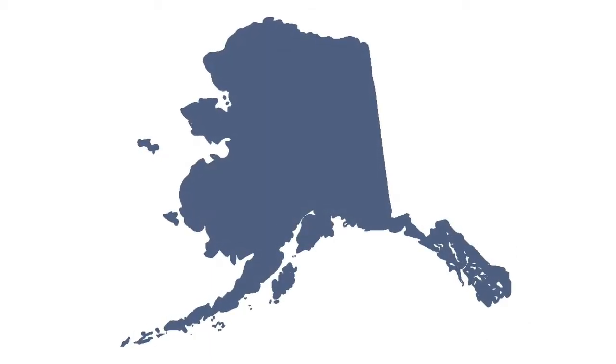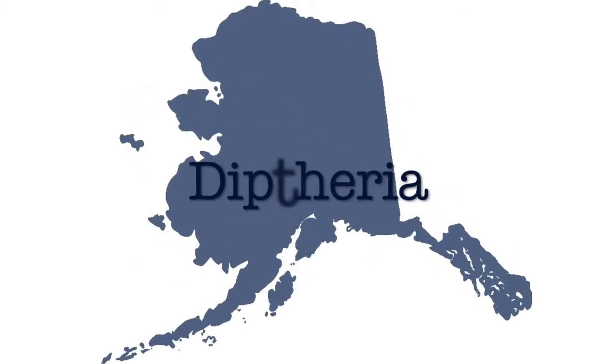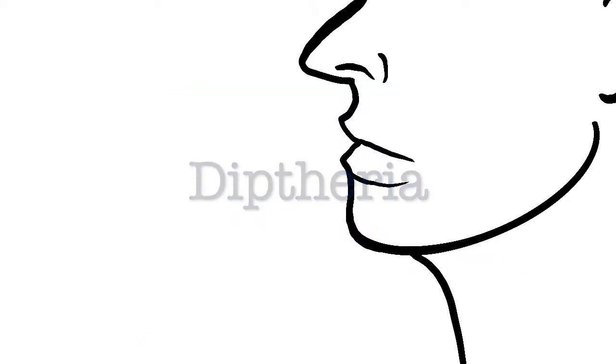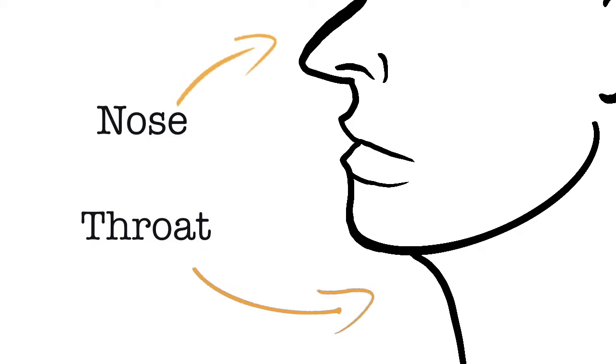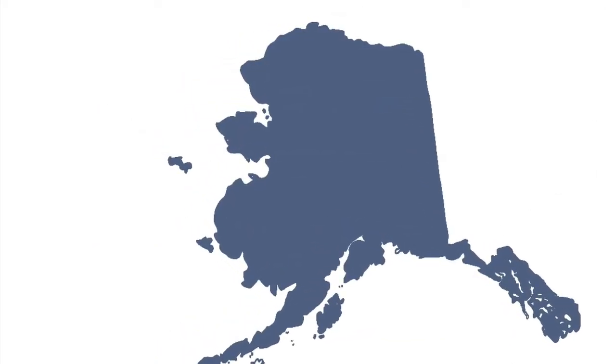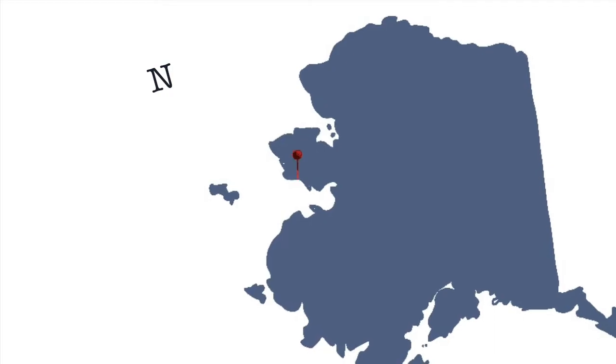Back in 1925, Alaska was dealing with a diphtheria epidemic. Diphtheria is a serious infection of the nose and throat that makes it very difficult to breathe. So when this disease started to spread to the remote outreaches of a town called Nome, Alaska...